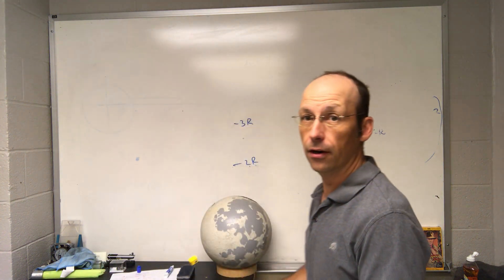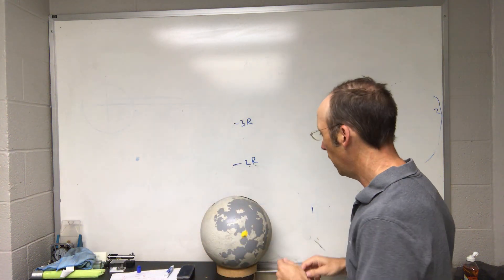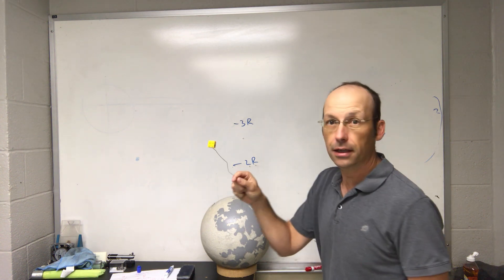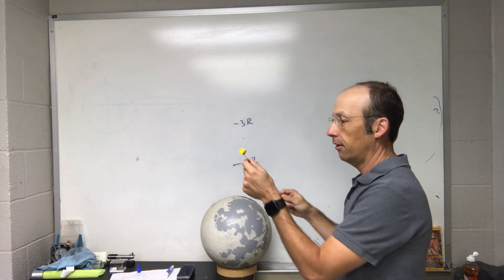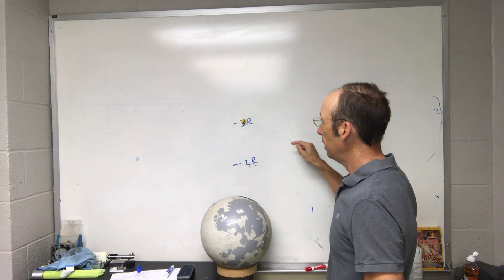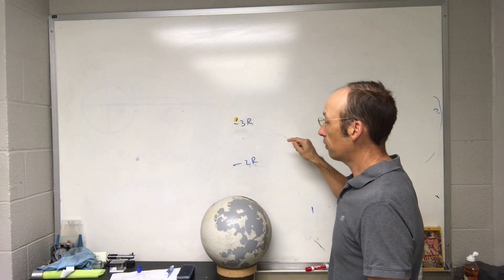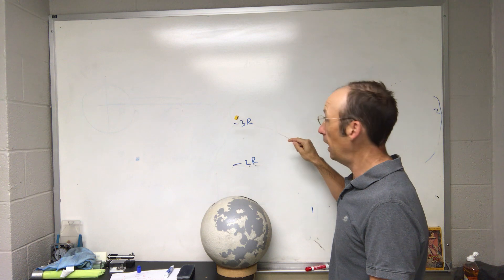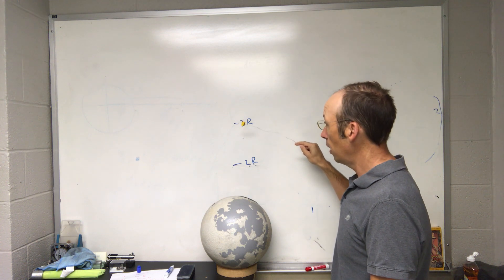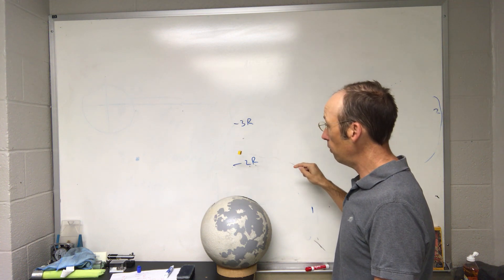I have here the moon and I have an object here, the Lego piece. So this Lego piece is in space. It starts at a distance of three times the radius of the moon and at rest, and it falls down to two R.